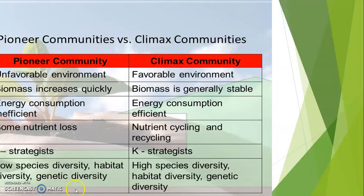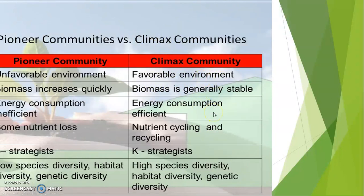Seed longevity will also increase from pioneer to climax. Biotic potential is high in pioneer and low in climax, with high clutch size in pioneer. Entropy, which is randomness, is more in pioneer and less in climax. Stability is less in pioneer and more in climax. Lifespan is short in pioneer and long in climax. Generation time is short in pioneer and long in climax. Resistance follows an increasing trend — climax communities have more resistance. Resilience follows a decreasing trend — pioneer communities have more resilience, climax communities have less resilience.